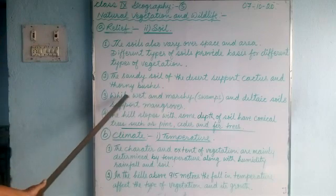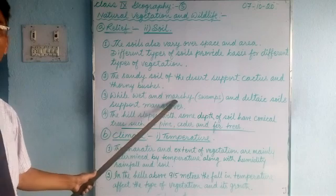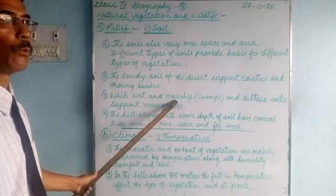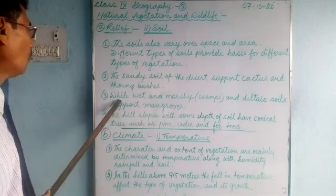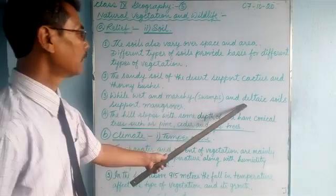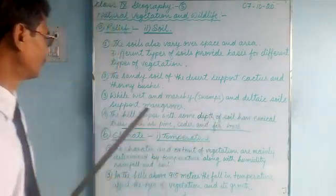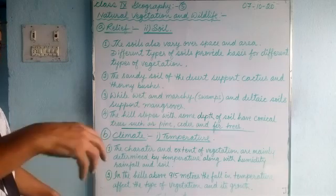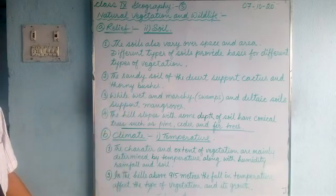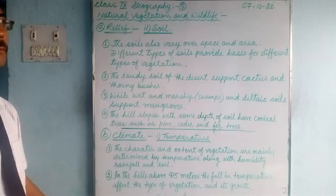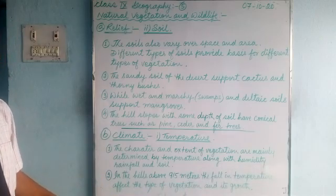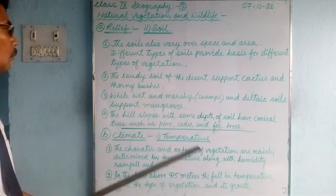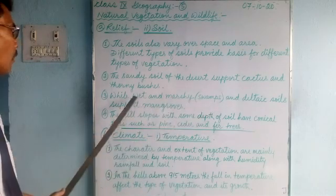Number three: wet and marshy lands — marshy means swamps, where water and soil are present in equal concentration — and deltaic soils near deltas support mangrove forests. Mangrove plants have roots that are above the water so they can survive. When there is excess water, most plants die, but mangroves are suitable for swampy, deltaic, or wet soils.